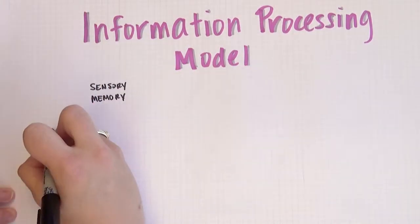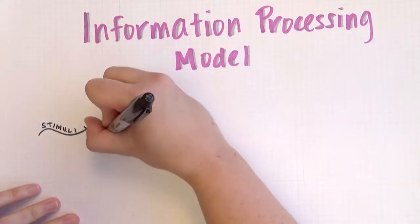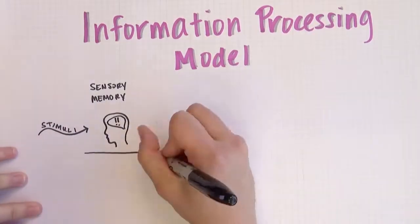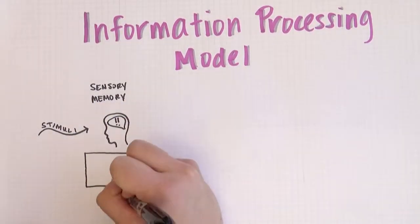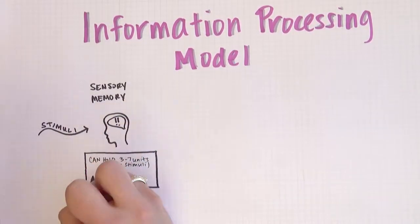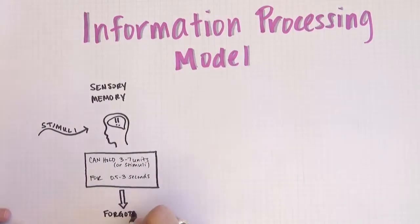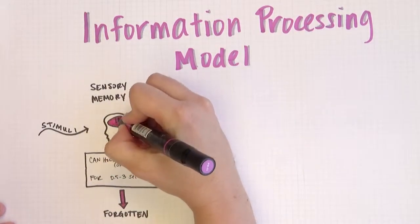Once you pay attention to a signal, it's sent to working memory. Working memory is the first place new information goes when we are learning. Eventually, we want what we are learning to be encoded into long-term memory. But first, it has to go into working memory.